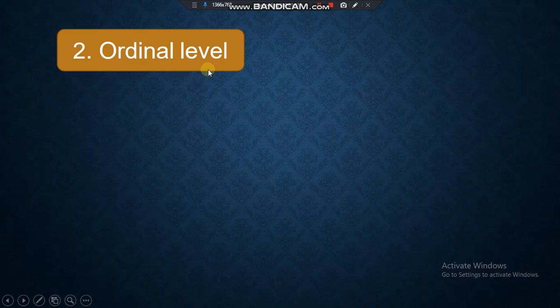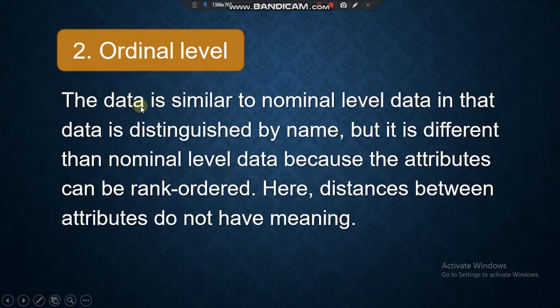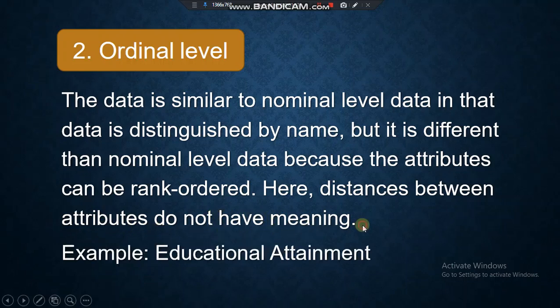The second is ordinal level. The data is similar to nominal level data in that data is distinguished by name. But it is different than nominal level data because the attributes can be rank ordered. Here, distances between attributes do not have meaning. Example: educational attainment. Elementary, high school, college.